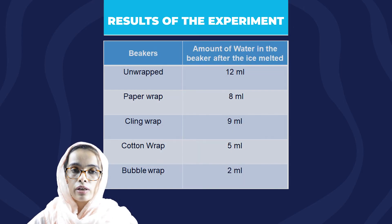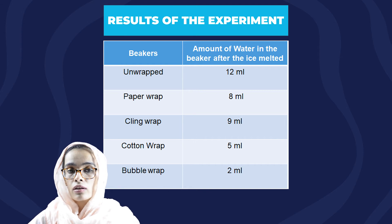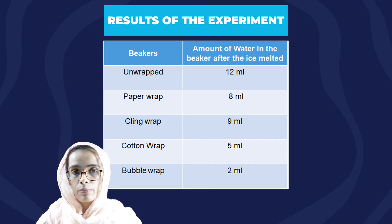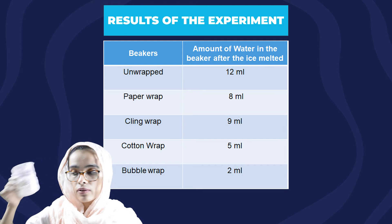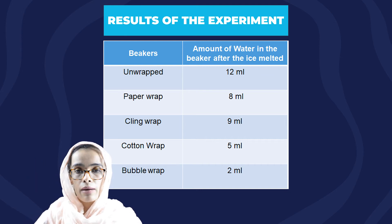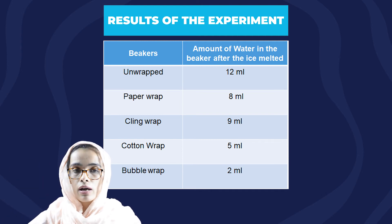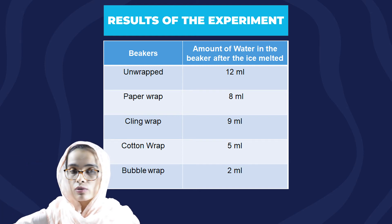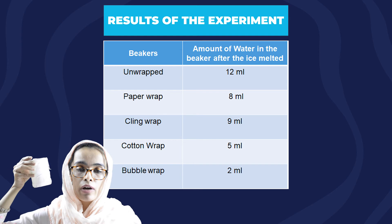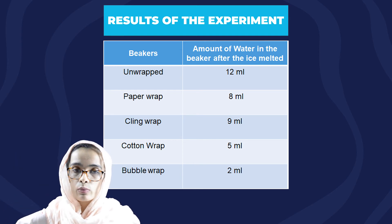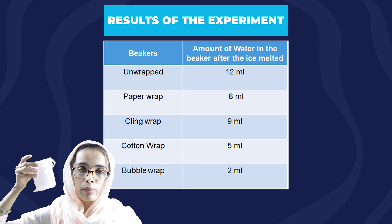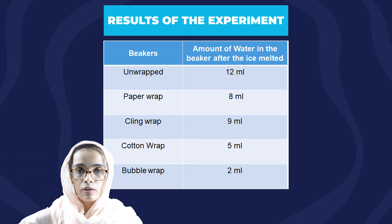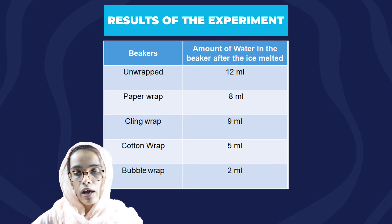We are back after 10 minutes. The beaker that was not wrapped has 12 ml of water. The beaker wrapped with paper has 8 ml, the one wrapped with cling wrap has 9 ml, the one wrapped with cotton has 5 ml, and the one wrapped with bubble wrap has 2 ml. So the unwrapped beaker has the most water, and the bubble wrap beaker has the least.